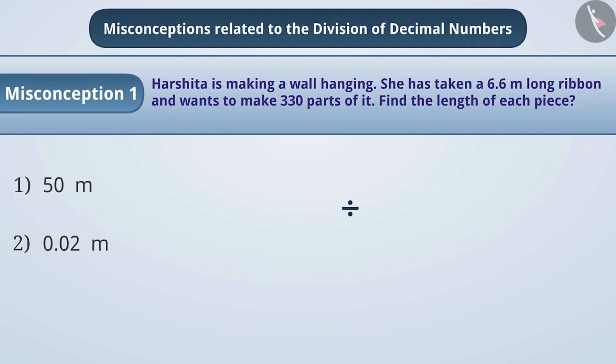While dividing, students often have this misconception that larger numbers should be divided by smaller numbers. So, they divide 330 by 6.6. This gives them the result 50 which is the wrong answer. Hence, option 1 is incorrect.